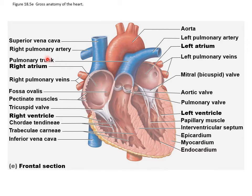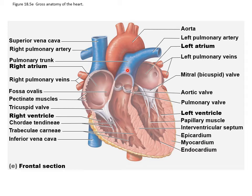The pulmonary trunk is where blood is taken away from the right ventricle. The right ventricular wall is a lot smaller and not as thick as the left ventricular wall. When the heart contracts, blood in the right ventricle is pumped through the pulmonary trunk to the lungs, and the left ventricle pumps blood into the aorta into the systemic circulation.